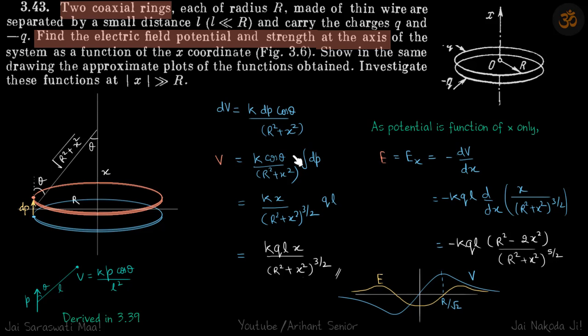You will see that because we are talking about this point, x is constant. So everything is constant except P. So we write the dP separately, and dP because all these small dipoles are in the same direction.